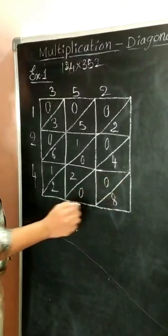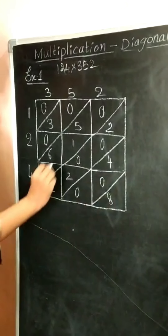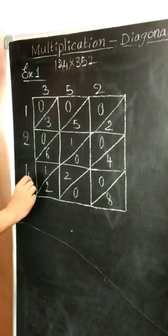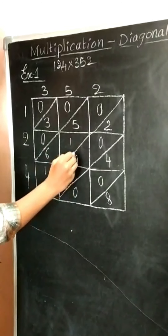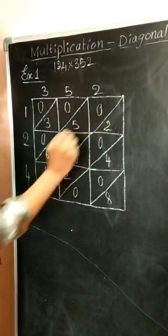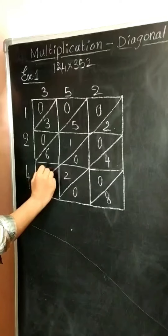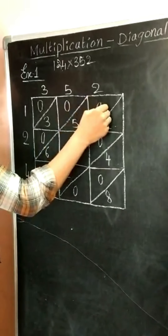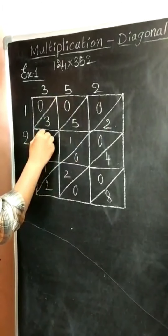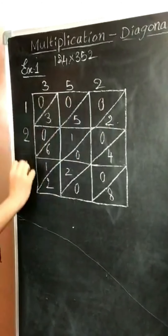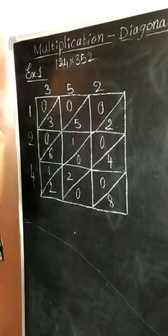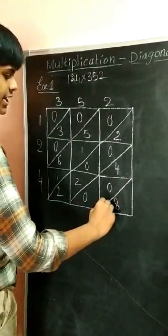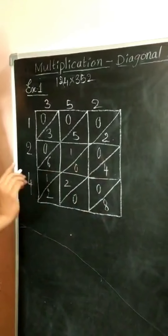In the first diagonal, 8 is there. In the second diagonal, 0, 0, 4 are there. In the third diagonal, 2, 2, 0, 0 and 2 are there. In the fourth diagonal, 1, 6, 1, 5 and 0 are there. In the fifth diagonal, 0, 3 and 0 are there. In the sixth diagonal, only 0 is there. Add the numbers diagonal-wise to get the product.